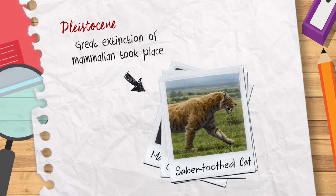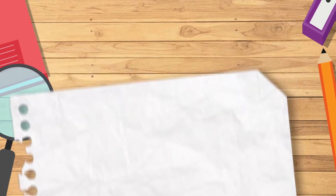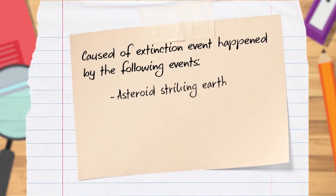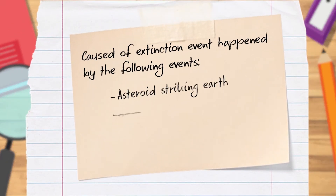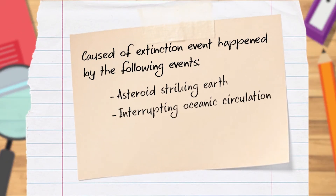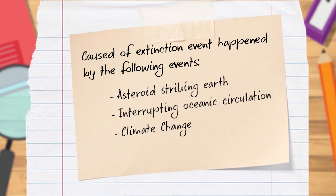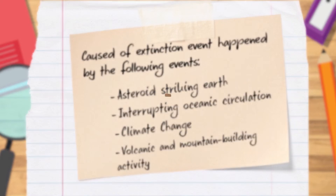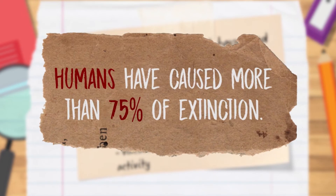Causes of extinction events include the following: asteroids striking Earth, disruption of oceanic circulation, climate change, and volcanic and mountain building activity. In addition, humans have caused more than 75% of extinctions.